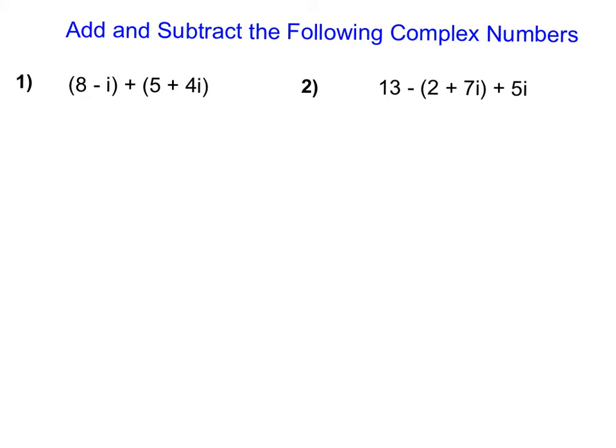So let's take a look at this next group of examples here. So here I can see that I have two complex numbers that I am adding together. To get rid of those parentheses, here I'm going to put a positive 1 out in front and distribute. So I have 8 and then that's minus 1i. And then here I have a plus sign, so this is a distribution of a positive 1 as well. So it's plus 5 plus 4i.